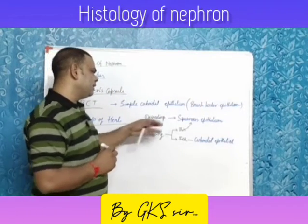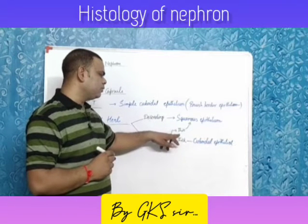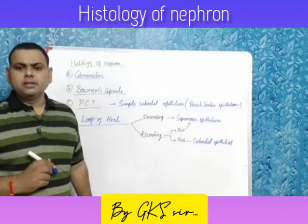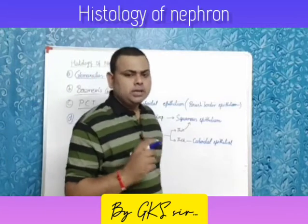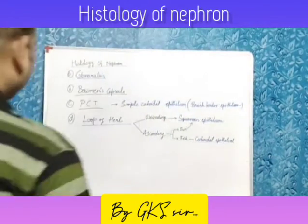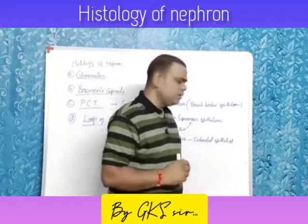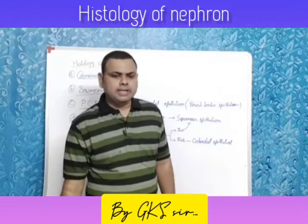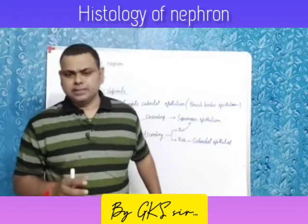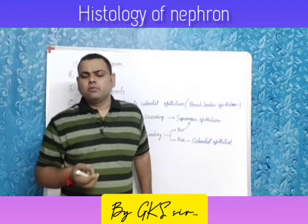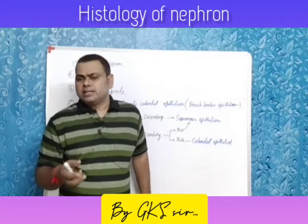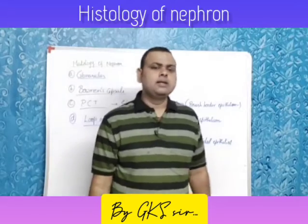So the descending limb is made up of squamous epithelium, but the ascending limb is made up of two types of cells: squamous epithelial cells as well as cuboidal epithelial cells. The ascending limb is impermeable to water and permeable to salts — water movement does not happen from the ascending loop of Henle, but it is permeable to salts.